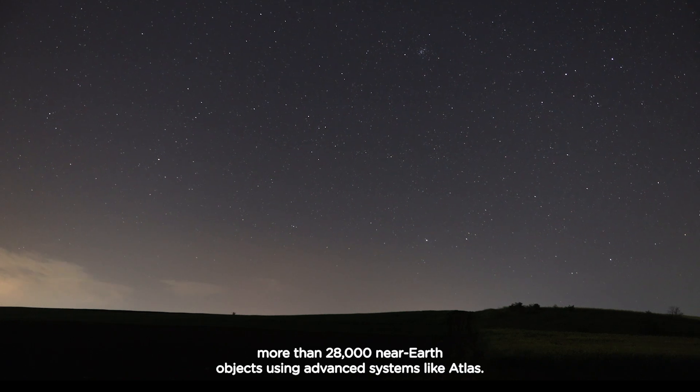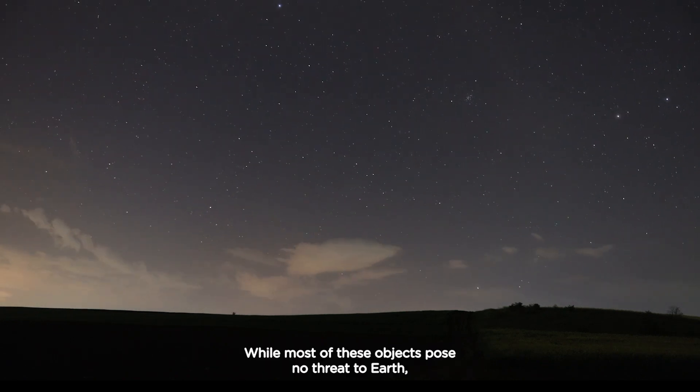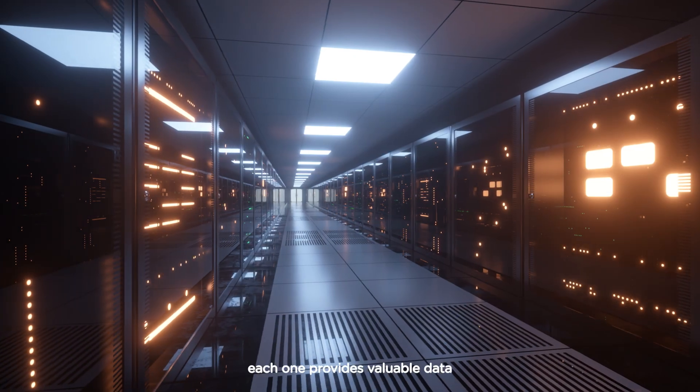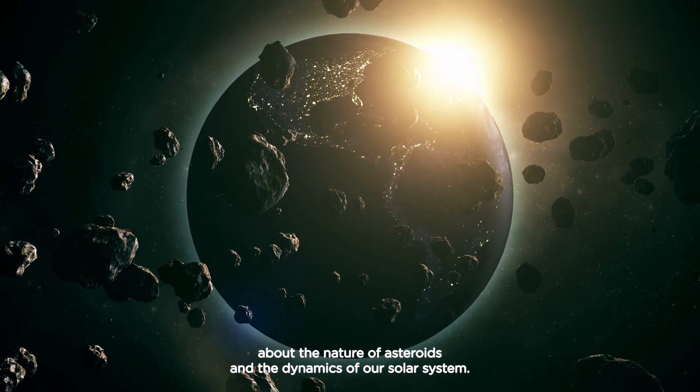NASA tracks more than 28,000 near-Earth objects using advanced systems like ATLAS. While most of these objects pose no threat to Earth, each one provides valuable data about the nature of asteroids and the dynamics of our solar system.